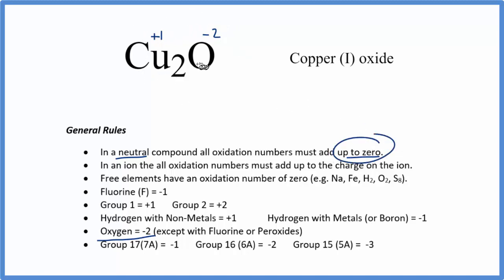For Cu2O, to find the oxidation numbers, we found oxygen, which is always minus 2 with a few exceptions. And then based on that, we figured out what the copper would have to be. So each copper here has a plus 1 oxidation number.